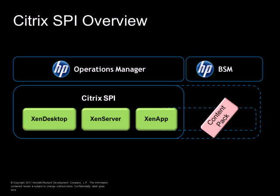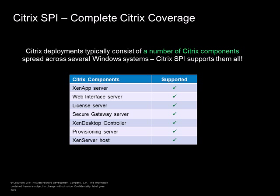Citrix Pi natively integrates with HP Operations Manager and is able to monitor Citrix Xen Desktop, Citrix Xen Server and Citrix Xen App solutions. Using the Citrix Pi content pack, it further integrates management and monitoring information into HP BSM. Citrix deployments typically consist of a number of components spread across several Windows systems, and Citrix smart plugin supports them all — from Citrix Xen App server, web interface, license server, secure gateway, Xen Desktop controller, provisioning server, as well as Xen Server host.